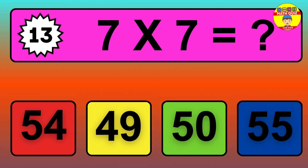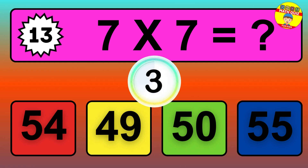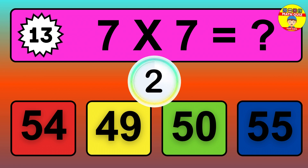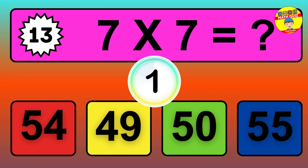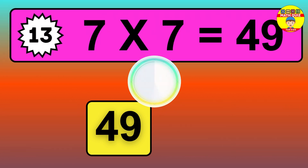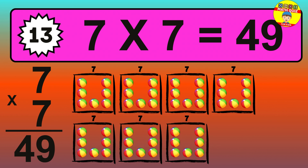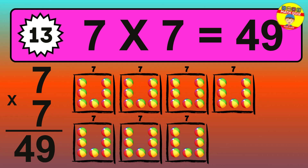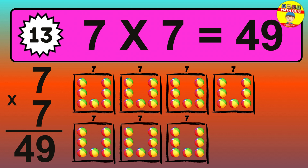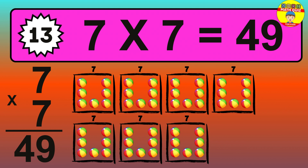Question 13. 7 times 7 equals what? The answer is 7 times 7 is 49. To calculate, we have 7 groups with 7 balls each one. So, how many balls do we have? 49 balls.